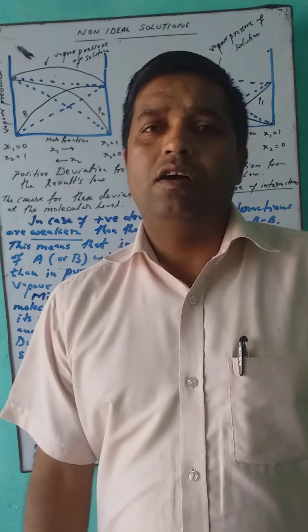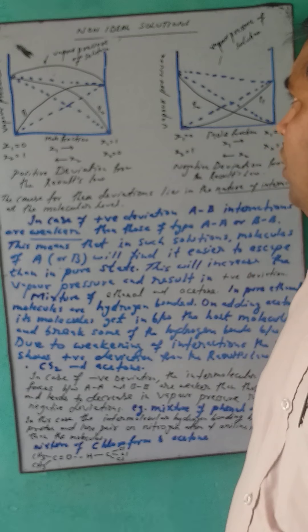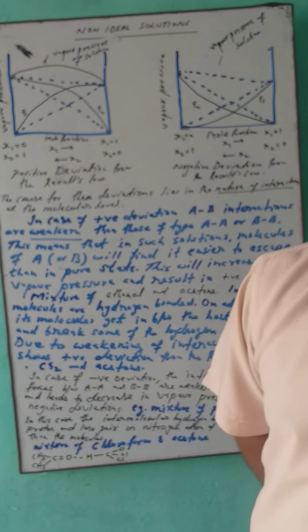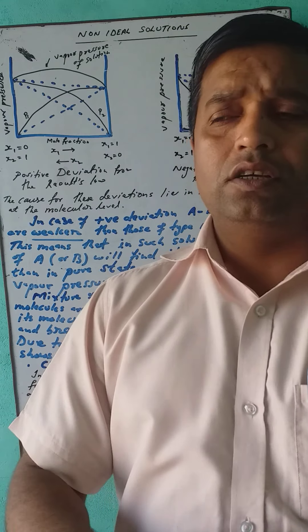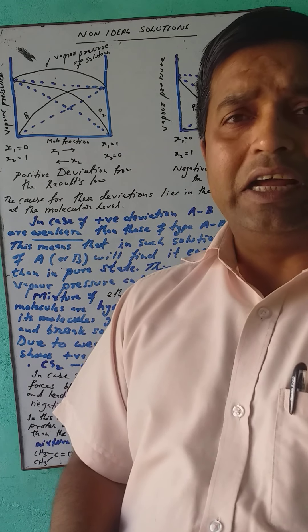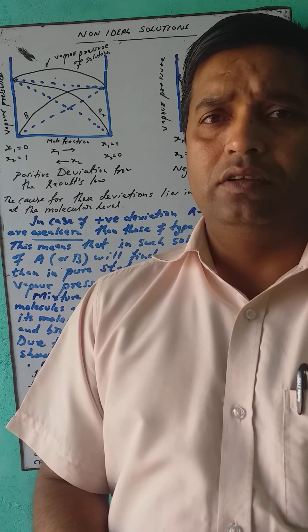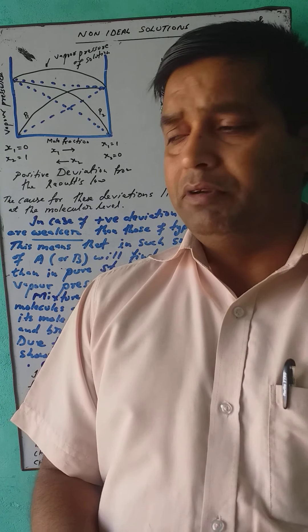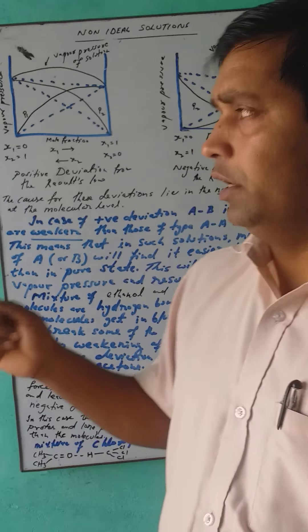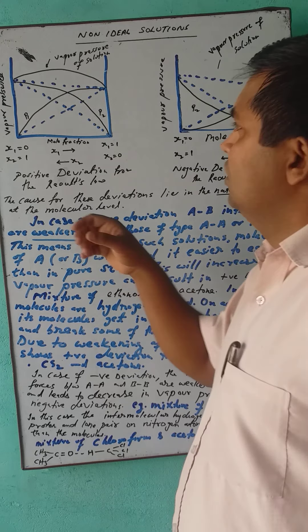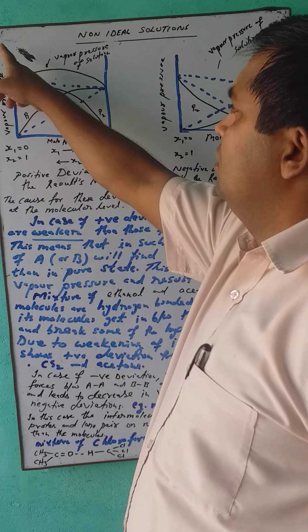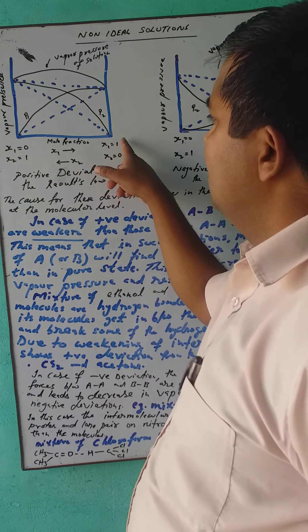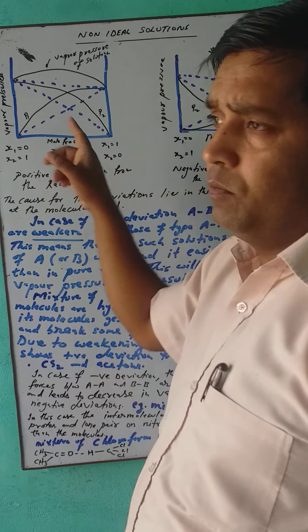Now we discuss non-ideal solutions. There are two types of deviations: positive deviation and negative deviation. Let us see — this graph indicates vapor pressure; there is a vapor pressure of component one.